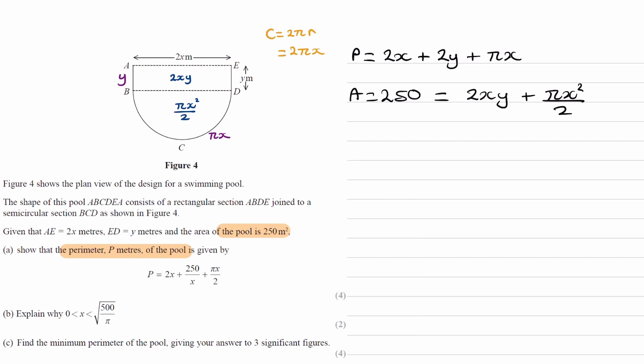We can then rearrange that equation for y. So, 2xy is 250 - πx²/2. Divide everything by 2x. When we divide this by 2x, the 2x goes on the bottom, so that becomes 4x. Simplify. This becomes 125/x. And in the second term, the x's cancel out, and we'll have πx/4.